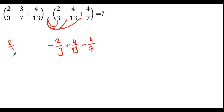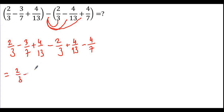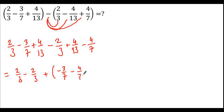Let me write these numbers as well: 2 over 3, minus 2 over 7, plus 4 over 13. I'll do the grouping again — 2 over 3 and minus 2 over 3 will be one group; minus 3 over 7 and minus 4 over 7 will be another group; and 4 over 13 terms will be the third group.